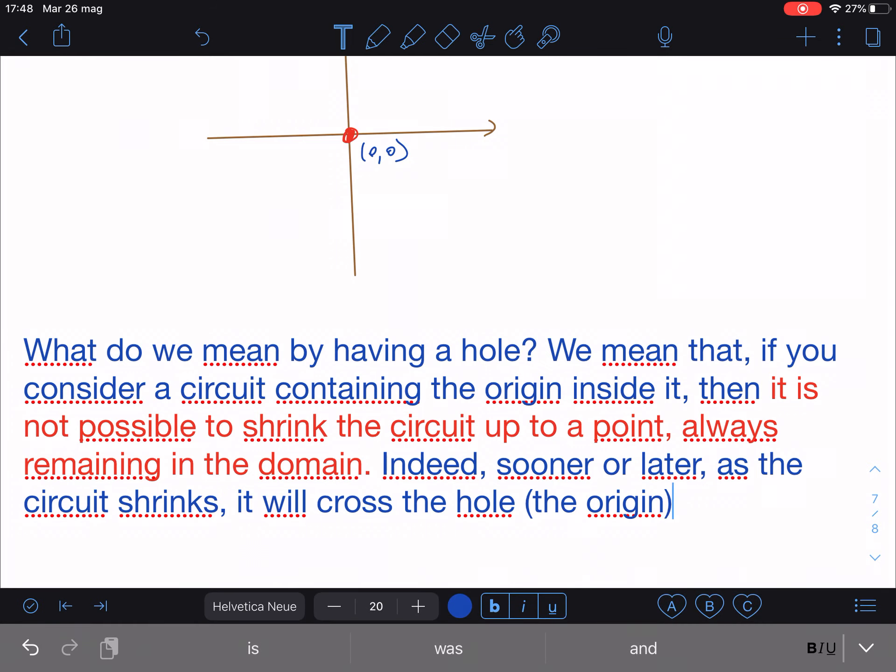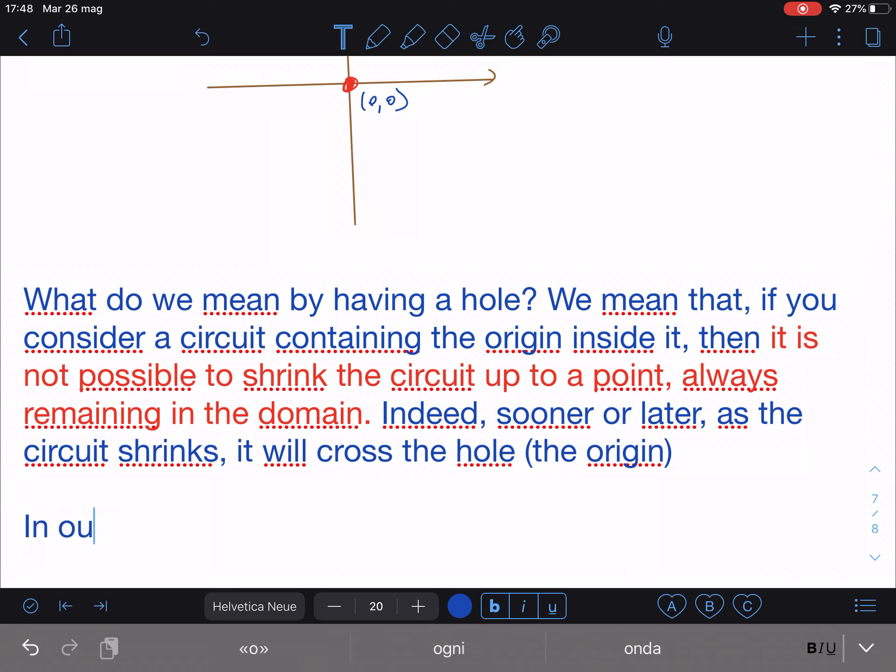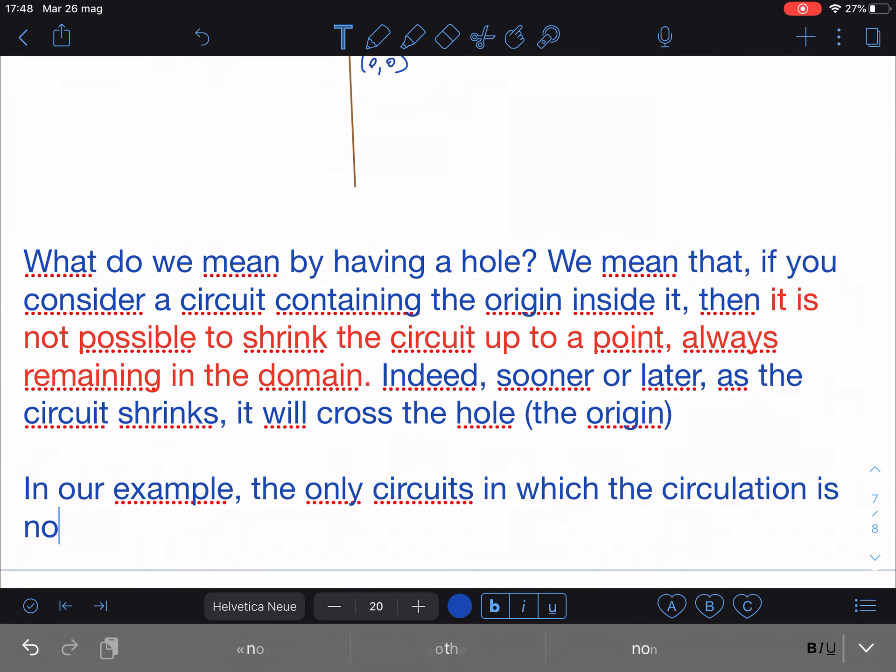And I will tell you this, that I will try to give you some more explanation. So in our example, the only circuits in which the circulation is non-zero, namely the circuits that prejudge the conservativity, that prevent our field from being conservative, are exactly those including the origin, so the hole of the domain, in their interior part.